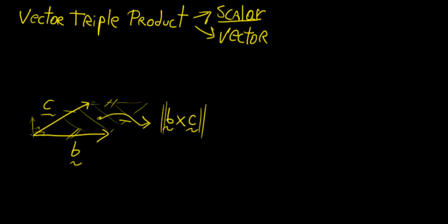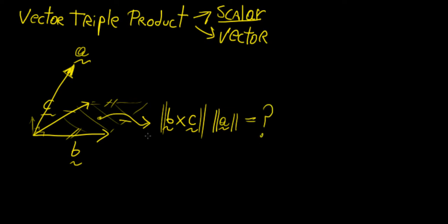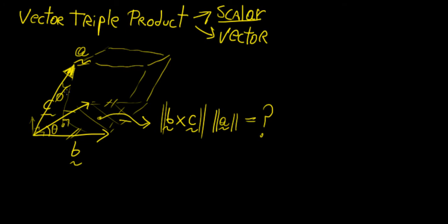Now imagine what happens when you have a third vector pointing in some arbitrary direction — let's call it vector a. If you take this area (the scalar quantity from the cross product) and multiply it by the total length of a, it turns out you're going to get the volume of a parallelepiped — basically a shape like a cube but with some angle. That whole volume is given by the dot product of a with the cross product of b and c: a · (b × c).